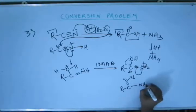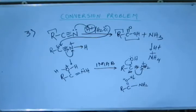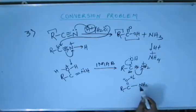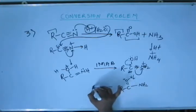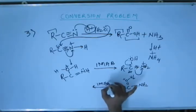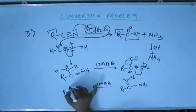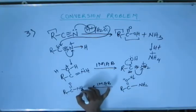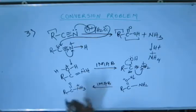Nitrogen becomes neutral because the electrons of the bond are placed into nitrogen's orbital. And yet again you have an intramolecular acid-base reaction — oxygen being less electronegative is more basic. In this intramolecular acid-base reaction, oxygen becomes neutral and nitrogen gains one more bond and again a plus charge.